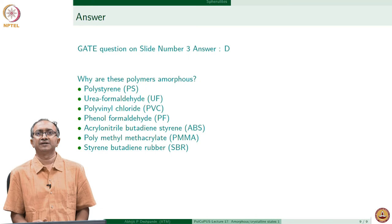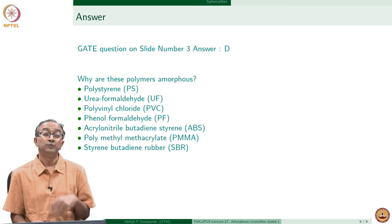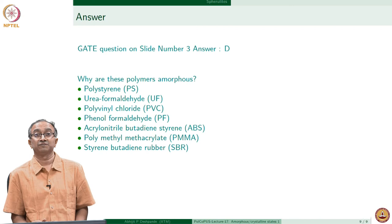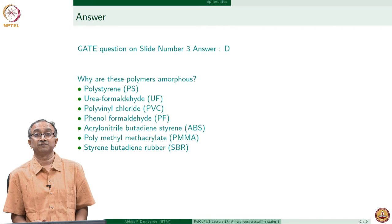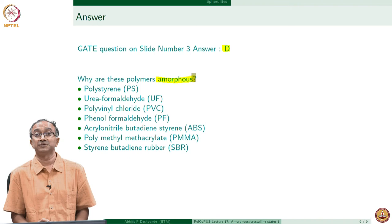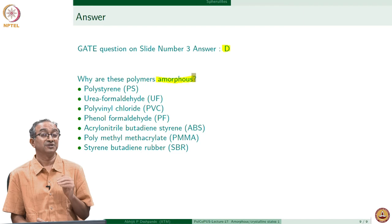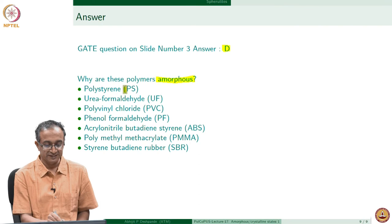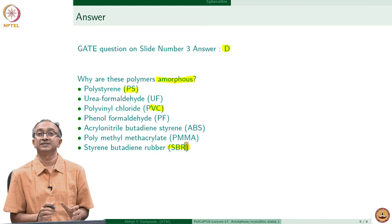To end this lecture, let us look at the answer to the exam question about which group of polymers is semi-crystalline. The answer is D. The subsequent question is to understand which polymers are amorphous and why. For example, why is polystyrene amorphous? Why is polyvinyl chloride amorphous? Why is rubber, which is a cross-linked system, amorphous?